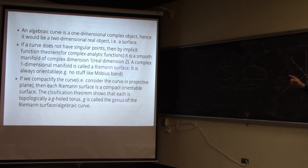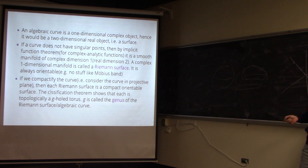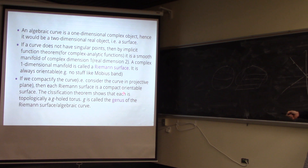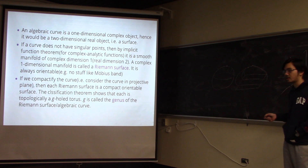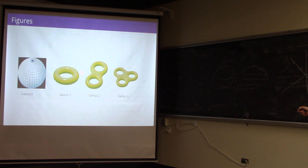If we consider the curve in the projective plane, then the curve is compact — it's not going off to infinity. A Riemann surface is then a compact orientable surface. From the classification theorem for compact orientable surfaces, each surface is topologically a g-hole torus. g is called the genus of the Riemann surface or algebraic curve. For genus zero you have the sphere, for genus one the torus, for genus two the two-hole torus, and so on.